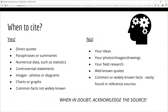Now that you know your thesis and have started organizing your information to draft your paper, the question arises: when do you cite your sources? The best advice is, when in doubt, always cite. If you are writing your own ideas or sharing your own research, photos, images, or drawings, you don't have to cite them. If you are citing common or widely known facts — such as historical dates, geographic features, or basic terms in your field of study, the kind of concepts you might find in a dictionary or encyclopedia — then you do not need to cite the source.